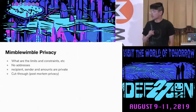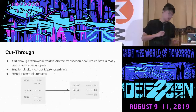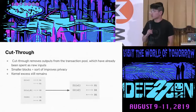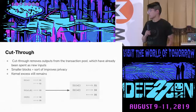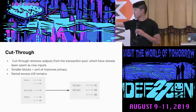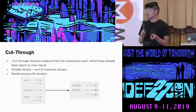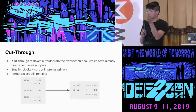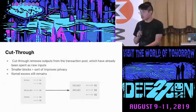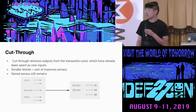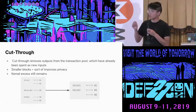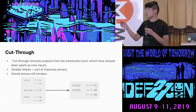Let's talk about privacy limitations. Cut-through removes outputs from the transaction pool that have already been spent. For example, you can merge inputs and outputs so there are fewer outputs. The benefit is smaller blocks and improved privacy if your adversary is only looking at the blockchain from a certain time. However, because you have archival nodes, cut-through is more beneficial simply for syncing the blockchain faster. The downside of cut-through is that the kernel excess still exists, so you know how many transactions occurred - you're just not able to link inputs and outputs together as well.